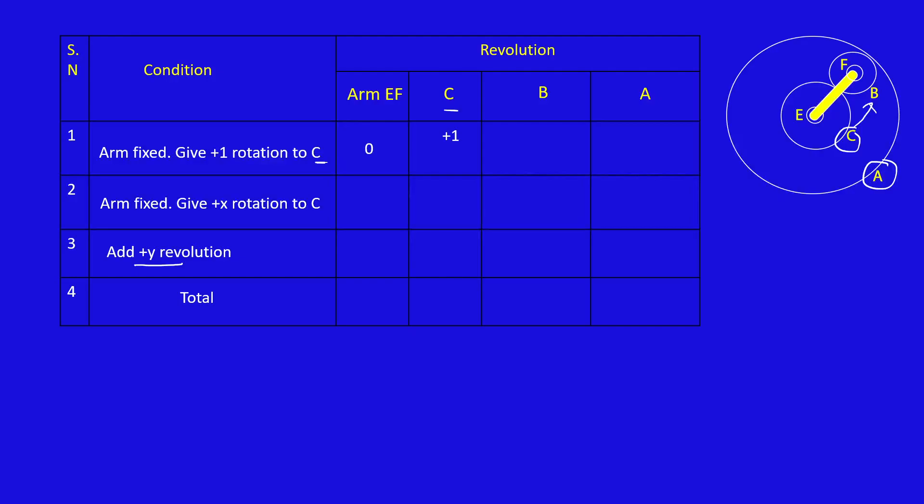Next we need to find out NB. NB meshes with NC. That is equal to TC divided by TB. Again NC value 1. NB equal to TC divided by TB. So that's what I have written TC divided by TB here.